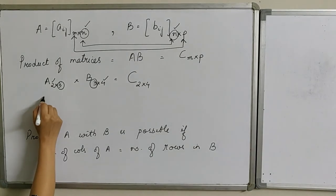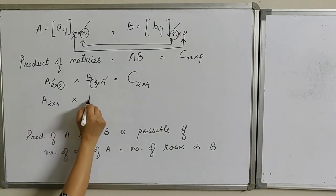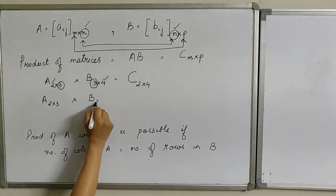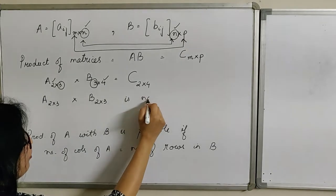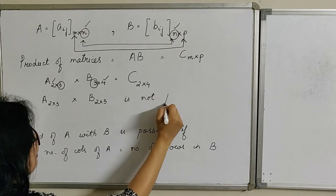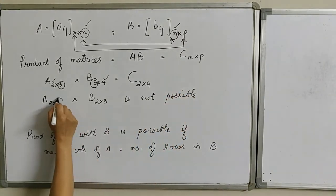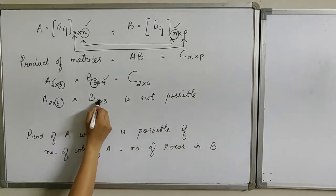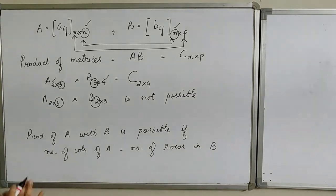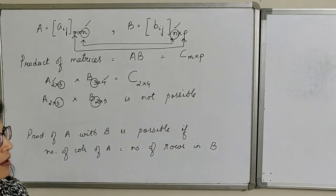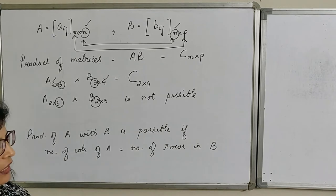On the other hand, matrix A of order 2 by 3 multiplied by matrix B of the same order 2 by 3 is not possible, because the number of columns of A is not equal to the number of rows of B. We will now see an example of how to find the product of two matrices, and later study the properties of this product.